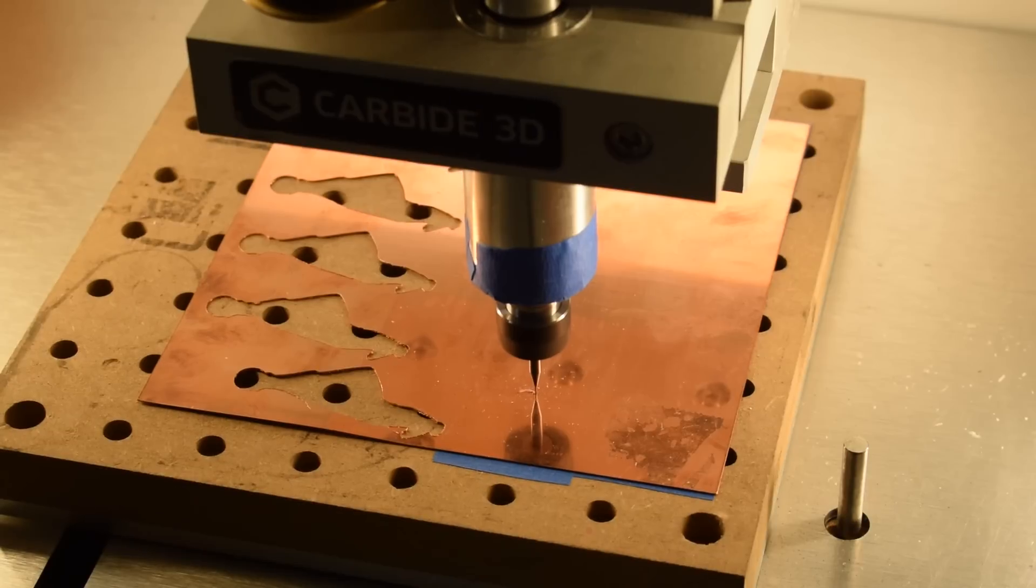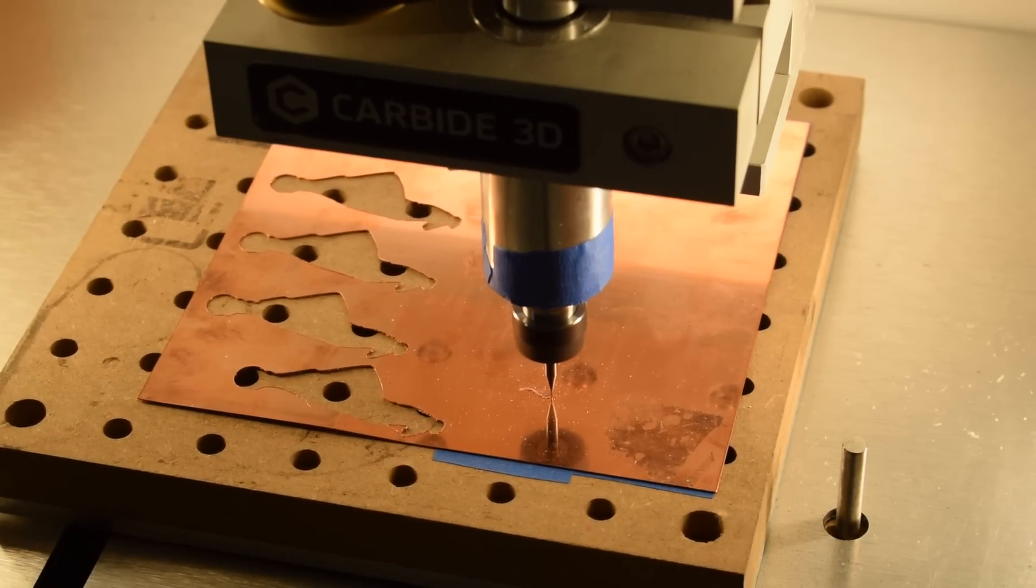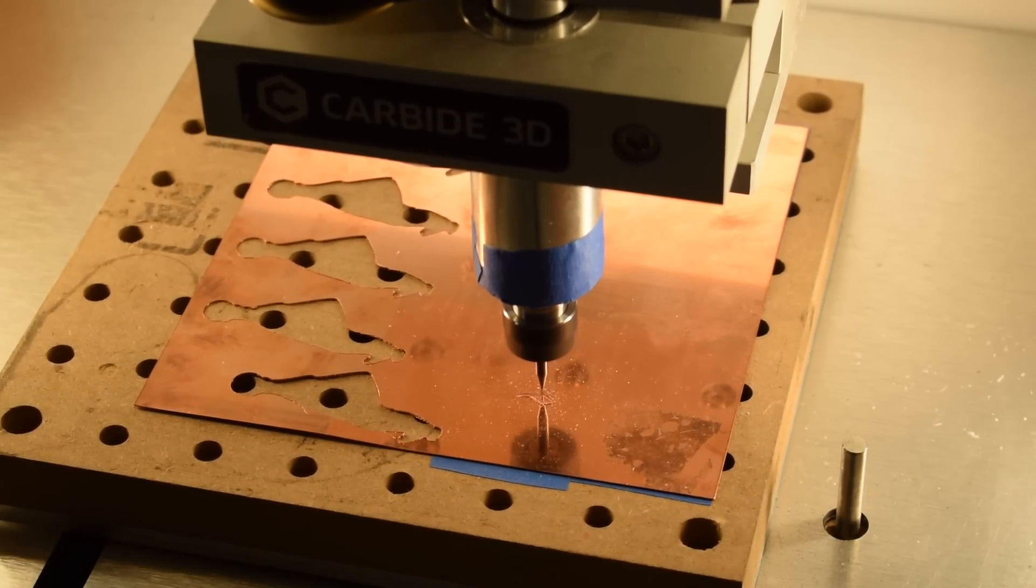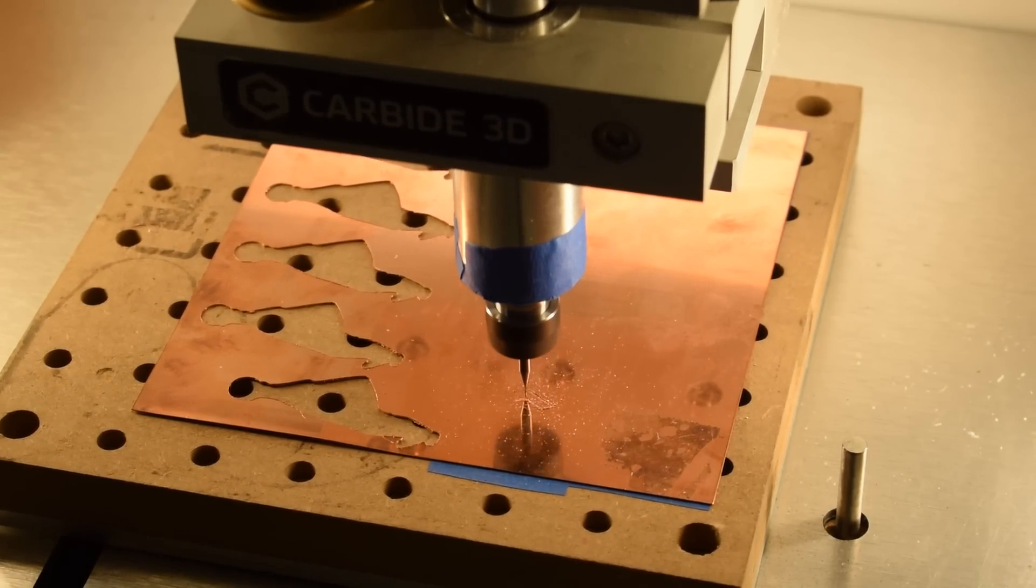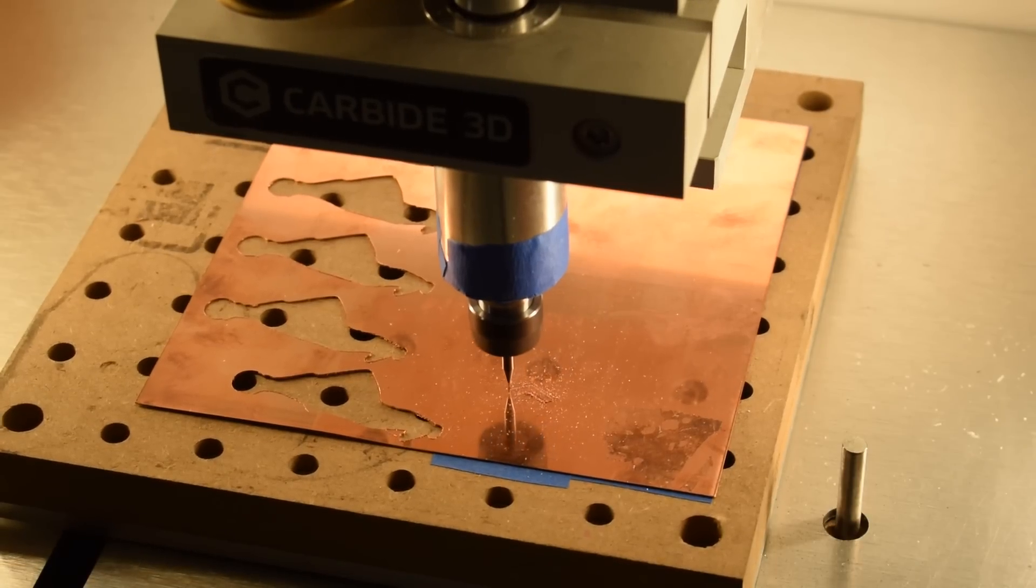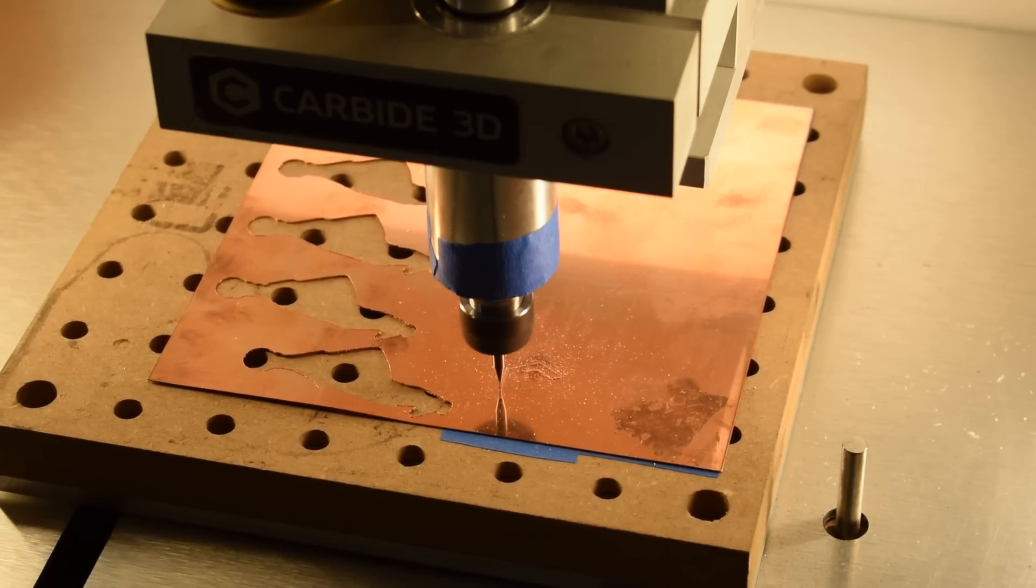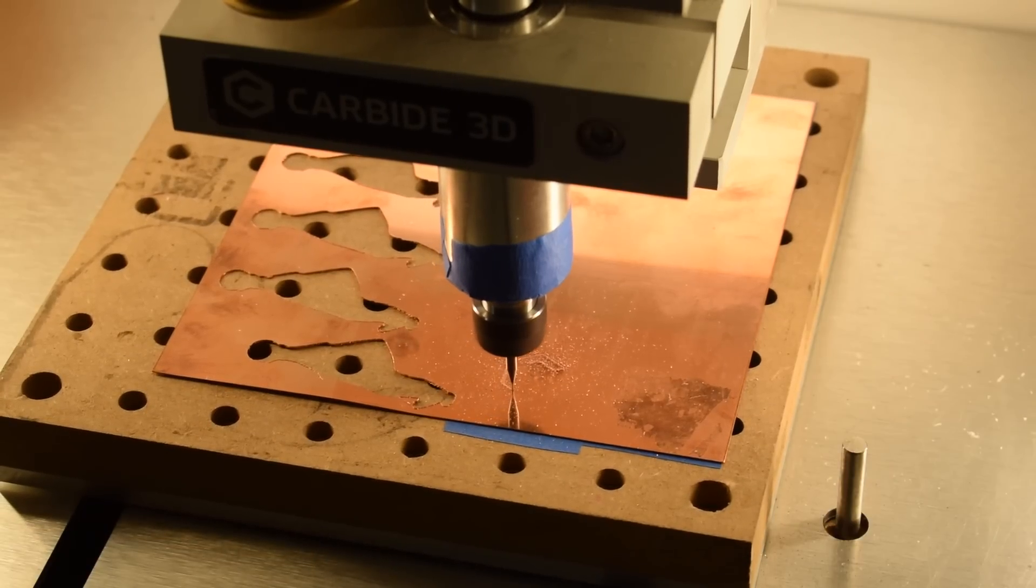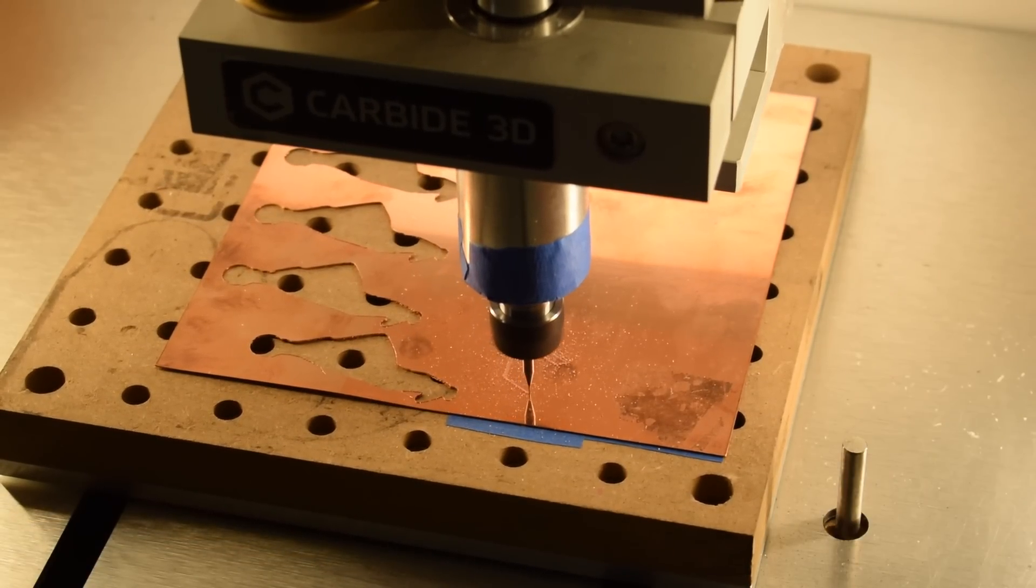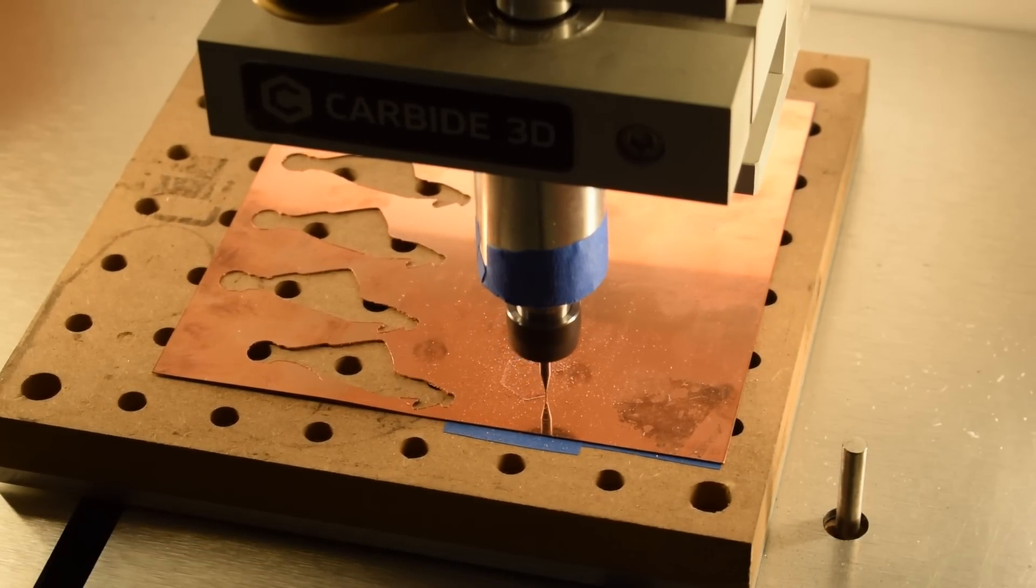First up on the menu is copper. I'm going to focus strictly on contour cutting today since most people are looking at using a CNC in a similar manner to a scroll saw. Delicate features, small kerf. I'm using a number 122, 1/32 inch end mill which will cut up to a sixteenth inch of material. This copper though is only about a 64th of an inch thick or about 0.4 millimeters.